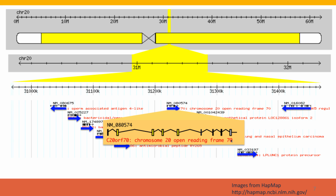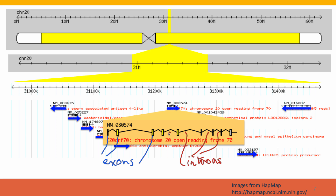Here's again blowing up a single gene. This is an open reading frame — a gene whose function isn't known. It doesn't have a specific name describing its function; it just has a number: open reading frame number 70 on chromosome 20. In this representation we see the exons represented as boxes and the introns represented as spaces joining the boxes. Only the boxed parts code for protein — only they will be assembled into the final messenger RNA that's translated into protein.